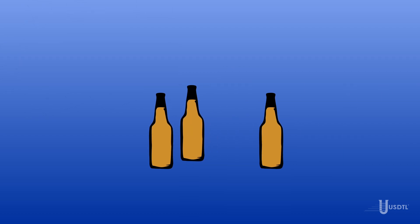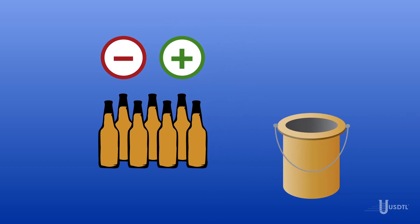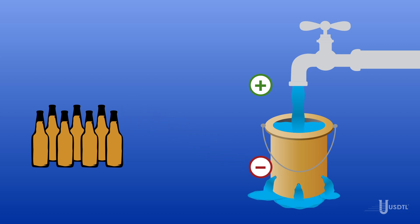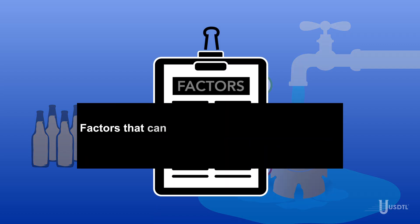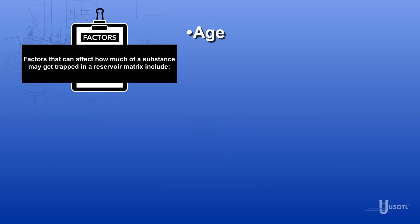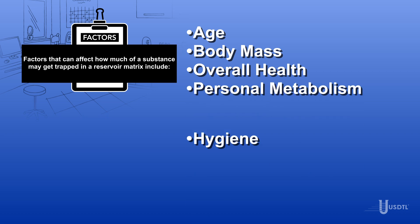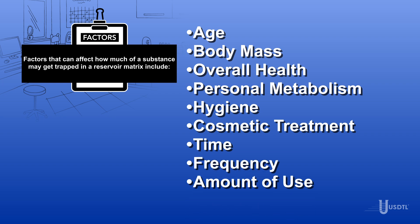When a person uses drugs or alcohol, there is an ongoing process of biomarker absorption and elimination. The build-up and breakdown of drug and alcohol biomarkers happens at the same time, making it impossible to accurately determine the amount of substance ingested. Factors that can affect how much of a substance may get trapped in a reservoir matrix include age, body mass, overall health, personal metabolism, hygiene, cosmetic treatment, time, frequency, and amount of use.